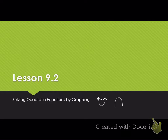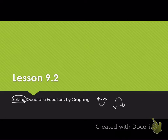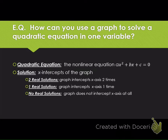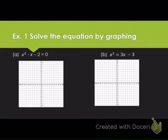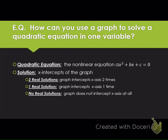The first thing to remember is that parabolas open up or parabolas open down. When we're talking about solving quadratic equations, we're looking at parabolas. The essential question is: how can you use a graph to solve a quadratic equation in one variable? The quadratic equation is the nonlinear equation ax squared plus bx plus c equals 0. It equals 0 because an equation has to have an equal sign.